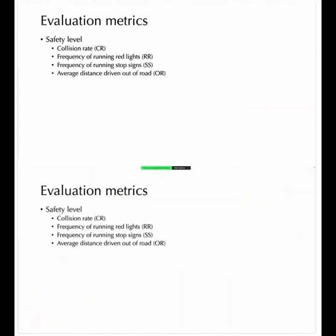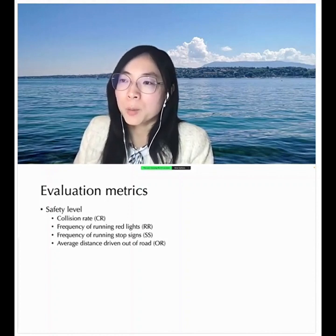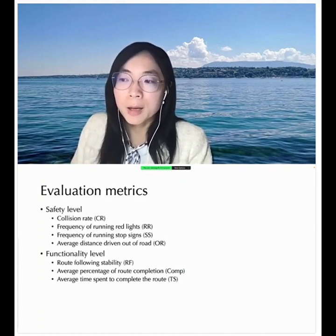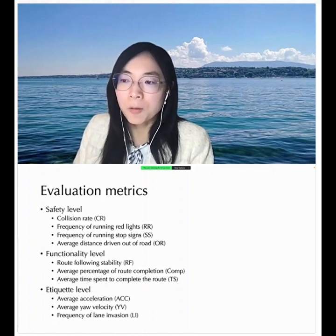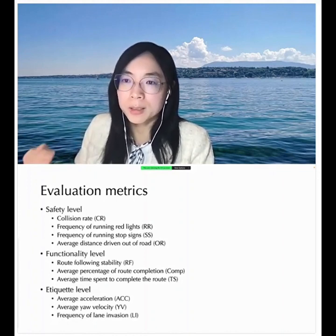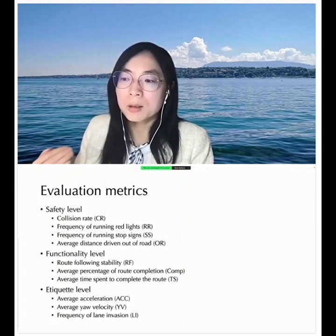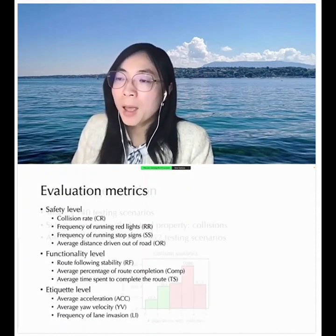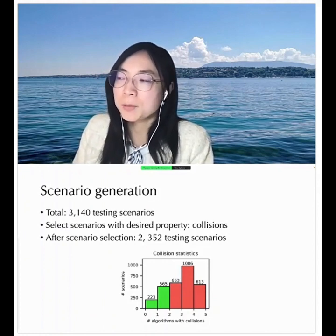There are different levels of evaluation metrics based on these scenario types, including the safety level — evaluating collision rate, frequency of running red lights, and frequency of running through stop signs — the functionality level, including route following and average route completion percentage, and the adequacy level, including average acceleration and average yield velocity to ensure comfortable driving behavior.